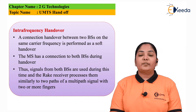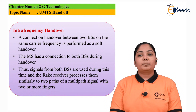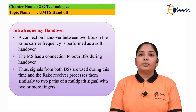The mobile station has a connection to both base stations during this type of handoff. Thus, the signals from both base stations are used during this time, and the rake receiver processes them similarly to multiple signals with two or more fingers.